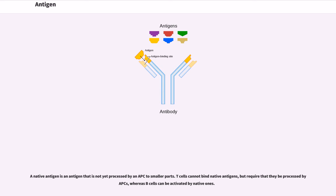A native antigen is an antigen that is not yet processed by an APC to smaller parts. T cells cannot bind native antigens, but require that they be processed by APC, whereas B cells can be activated by native ones.